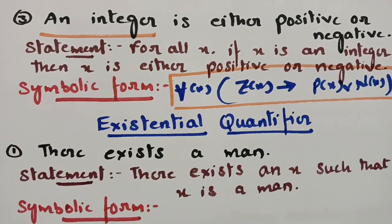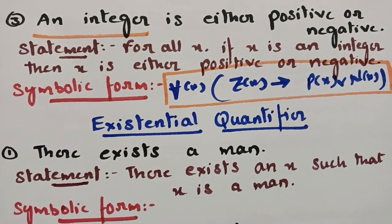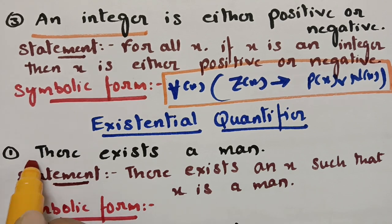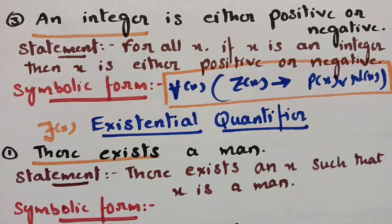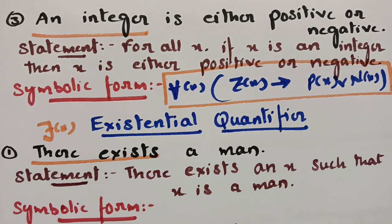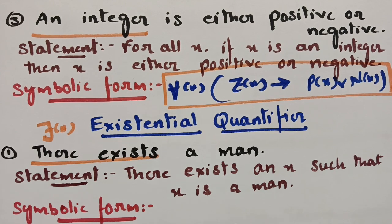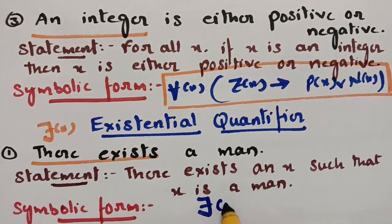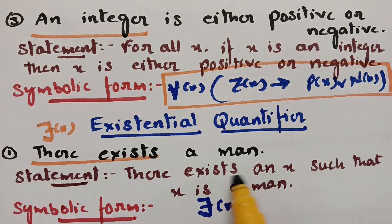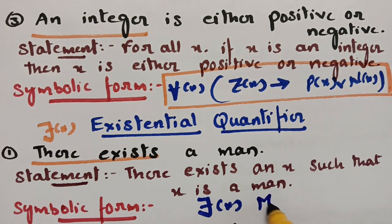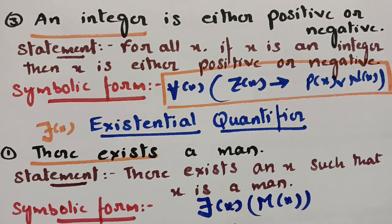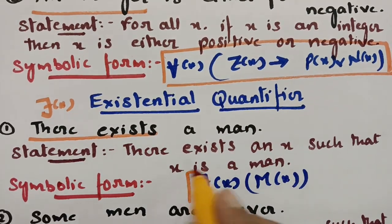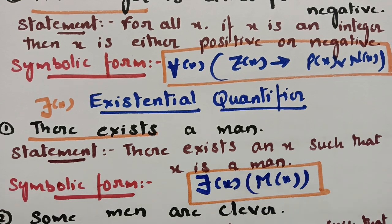Coming to the existential quantifier. The first example is 'There exists a man.' Since the phrase 'there exists' appears, we use the existential quantifier symbol. Symbolically this is written as: ∃x such that M(x), where M(x) means 'x is a man'.